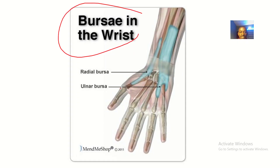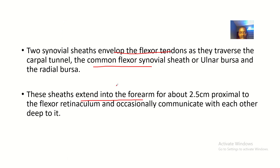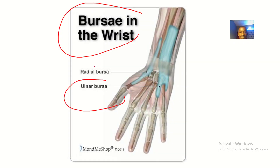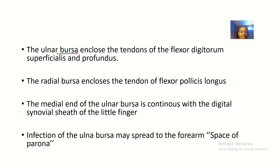To summarize: the ulnar bursa is also known as the common flexor synovial sheet, and the radial bursa is on the lateral side. The ulnar bursa encloses the tendons of the flexor digitorum superficialis and profundus, while the radial bursa encloses the tendon of the FPL — the flexor pollicis longus.